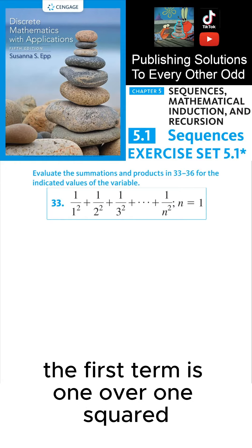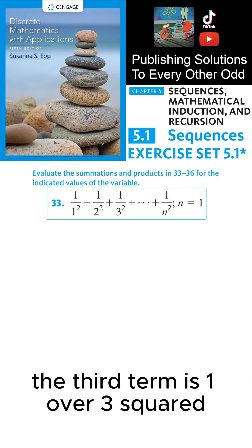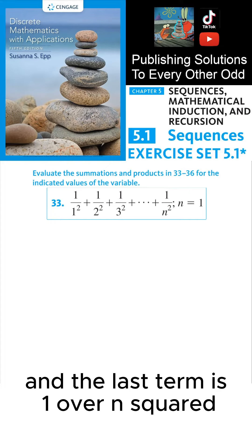The first term is 1 over 1 squared. The second term is 1 over 2 squared. The third term is 1 over 3 squared. And the last term is 1 over n squared.